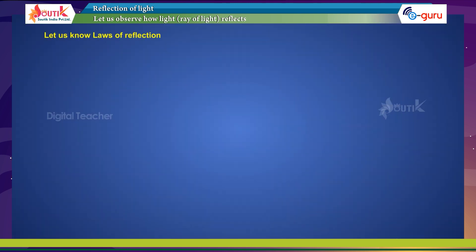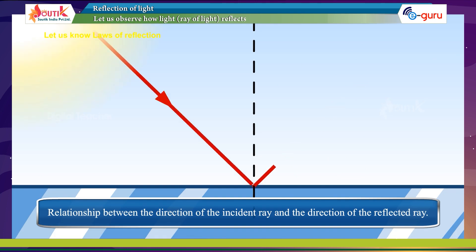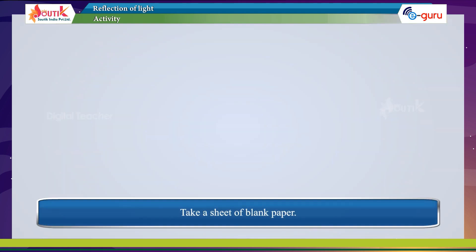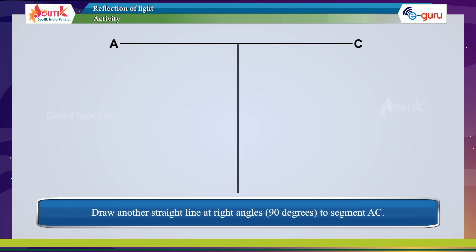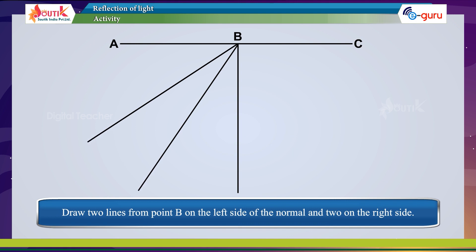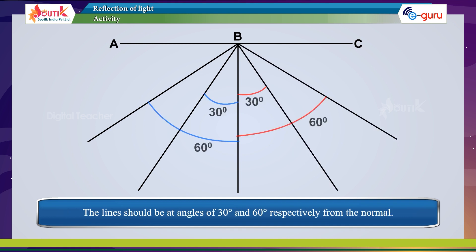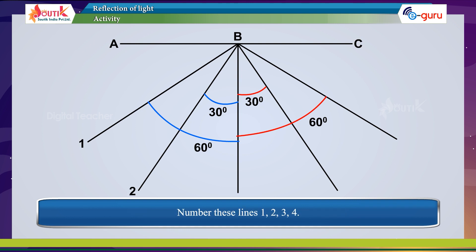Let us know the laws of reflection — the relationship between the direction of the incident ray and the direction of the reflected ray. Activity: Take a sheet of black paper and draw a line segment AC across the middle. Draw another straight line at right angle to segment AC. This second line bisects segment AC at point B, and is called the normal line. Draw two lines from point B on the left side of the normal and two on the right side, at angles of 30 degrees and 50 degrees respectively from the normal. Number these lines 1, 2, 3, 4.